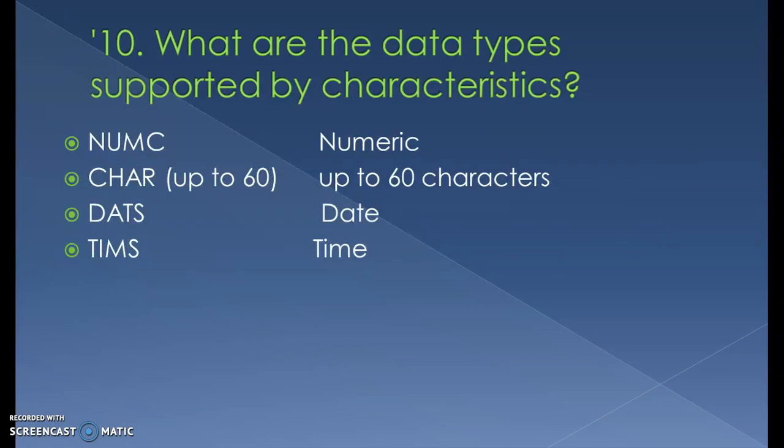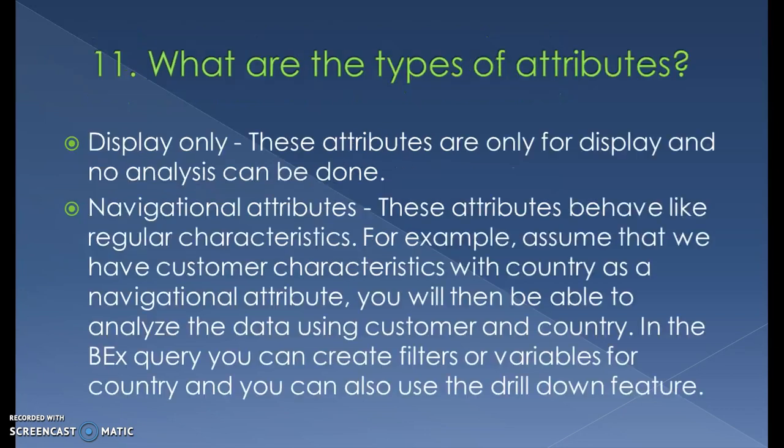What are the data types supported by characteristics? Numeric, character, date, and time are the data types supported by characteristics. When creating a characteristic, you have a dropdown where you can choose whether it is character, numeric, or date type, and then specify the length.